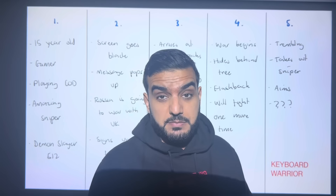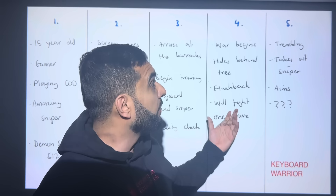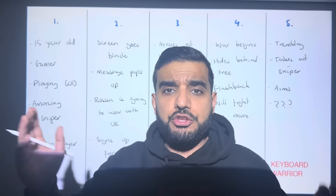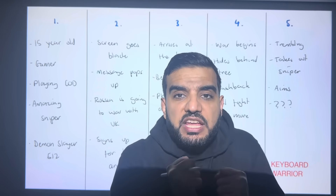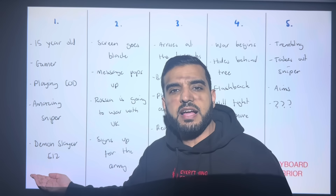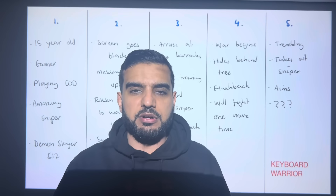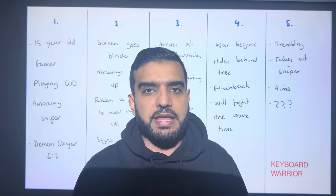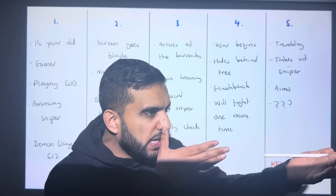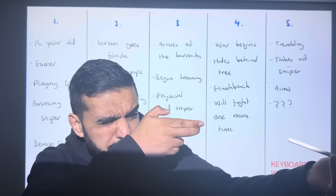You realise you can't shoot a sniper gun and that life online is very different to life in person. In paragraph four, the battle begins — all the soldiers run one way and you run the other. You hide behind a tree, scared and shaking, but you have a flashback to the days when you were Demon Slayer 512. At the end of paragraph four you get up, take out your sniper, and get ready to fight. In paragraph five, trembling, you look across the battlefield, think you've found the Russian army general, take aim, and you're about to shoot.